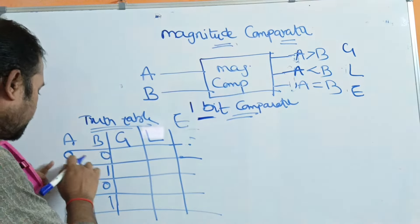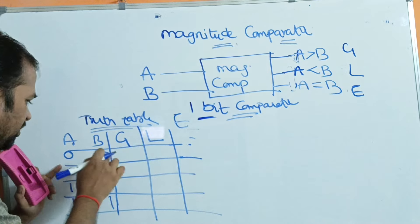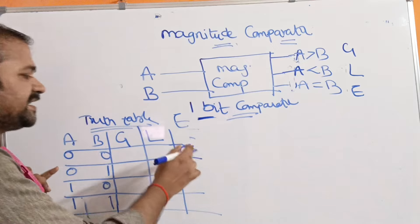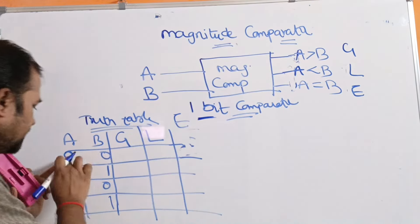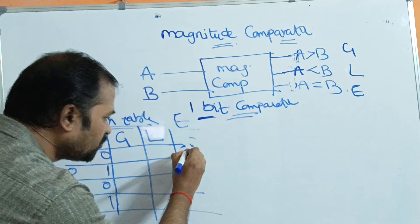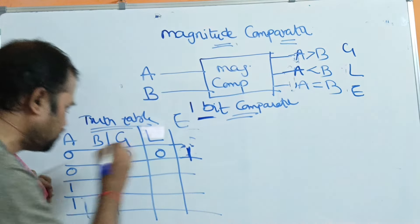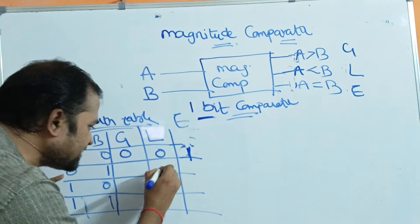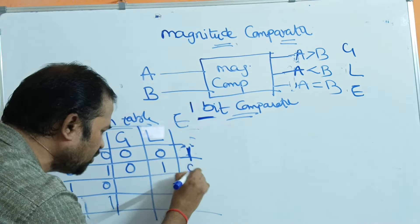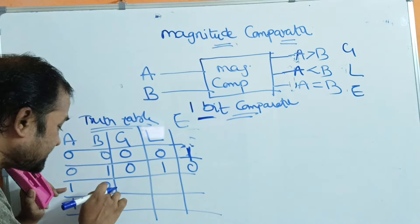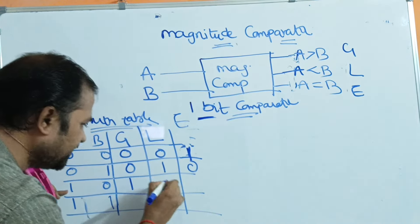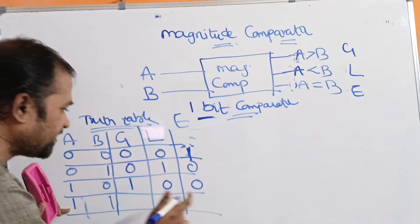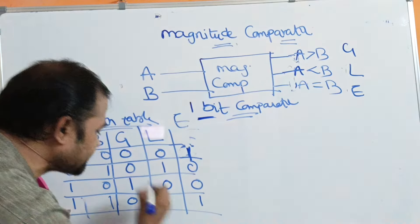Let us fill the truth table. For 0-0: 0 equals 0, so in the E column the output is 1 and the remaining cells are 0. For 0-1: 0 is less than 1, so in the L cell the output is 1 and remaining cells are 0. For 1-0: 1 is greater than 0, so in the G cell the output is 1 and remaining cells are 0. For 1-1: 1 equals 1, so in the E cell the output is 1 and remaining cells are 0.